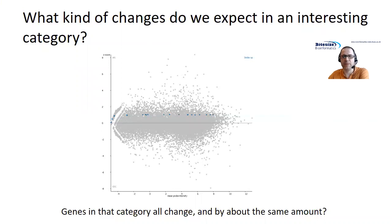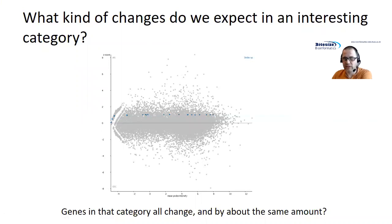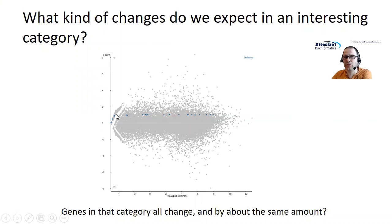We need to think about what sort of pattern of expression change we're expecting to see. We can be quite strict about this. We can say: I want all of the genes in my category to change, I want them all to change in the same direction, and I want them all to change by about the same amount. In the example on screen here, the highlighted genes are a functional set that is super interesting — you can see they all go up and they all go up by about the same amount. That's quite a harsh criterion, but if we can find it, great.